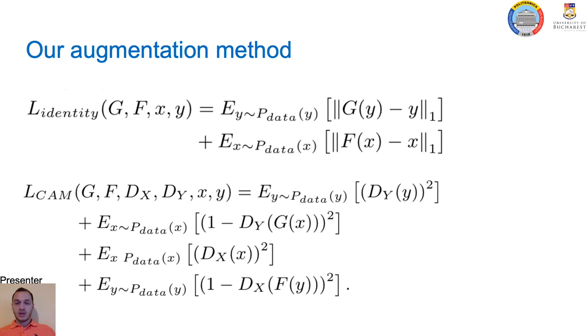The first additional loss is the sum of identity losses ensuring that the amplitude distribution of the input and output spectrograms are similar. This loss function is described in the first equation. The second additional loss, which is described in the last equation, is the sum of the least-square losses that introduce the attention maps.